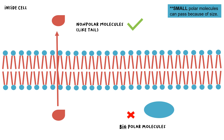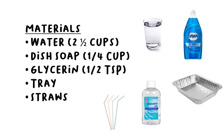Now we're ready to move on to making bubbles! Here's what you'll need: two and a half cups of water, a fourth cup of dish soap, a half teaspoon of glycerin — you can find this at your local pharmacy like Rite Aid or order it through Amazon — and a tray and about four straws.